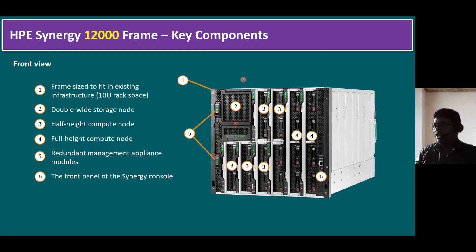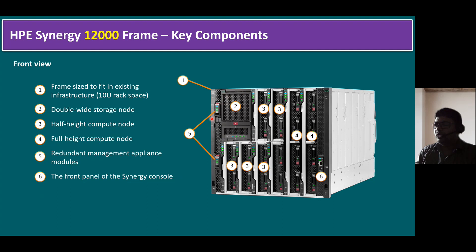Let me elaborate on the components again — the HPE Synergy 12,000 frame key components. In the front view of the Synergy frame, the first component is the frame sized to fit in existing infrastructure — as mentioned, it's a 10U rack space. The second is the double-wide storage node: if you open this storage node, you can insert many flash drives inside. The third item is the half-height compute node.